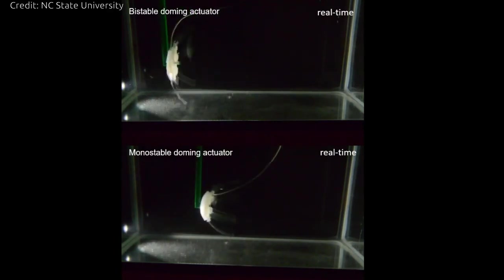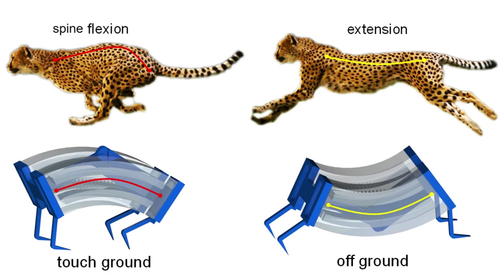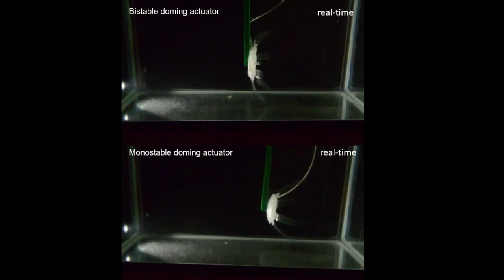Their previous work focused on making soft robots that were inspired by cheetahs. While the robots were very fast, they still had a stiff inner spine. They wanted to make a completely soft robot without an inner spine.